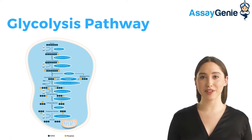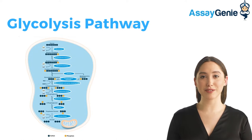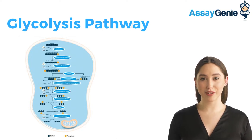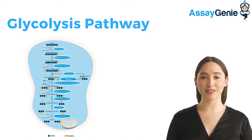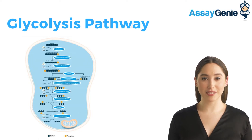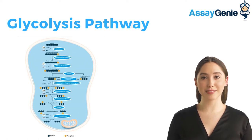There are three main steps in glycolysis. Step 1 involves substrate-level phosphorylation. Step 2 involves the conversion of glucose phosphate to fructose phosphate, and step 3 involves the formation of two molecules of phosphate. In addition, there are several intermediate steps that occur between these three main steps.